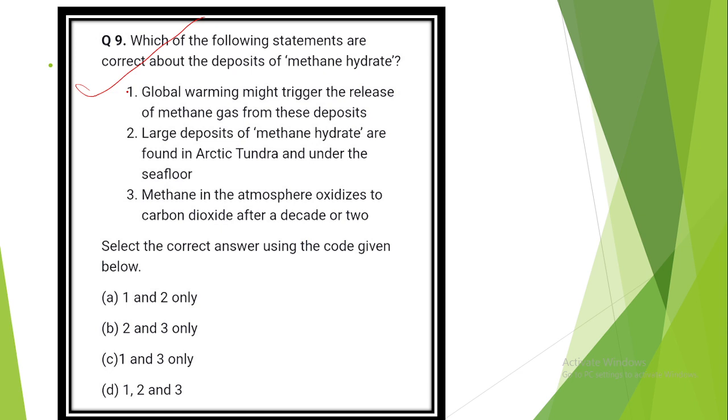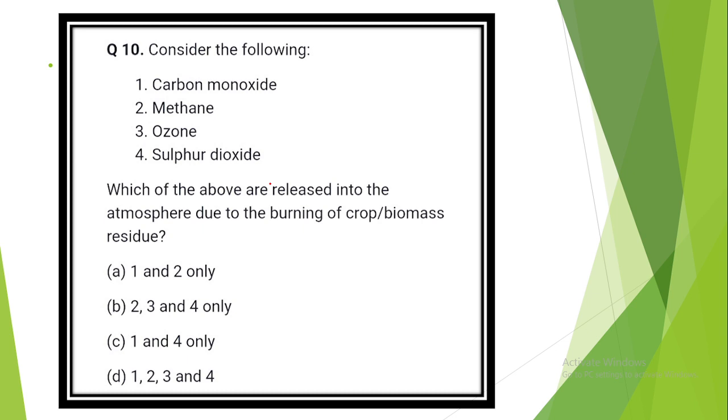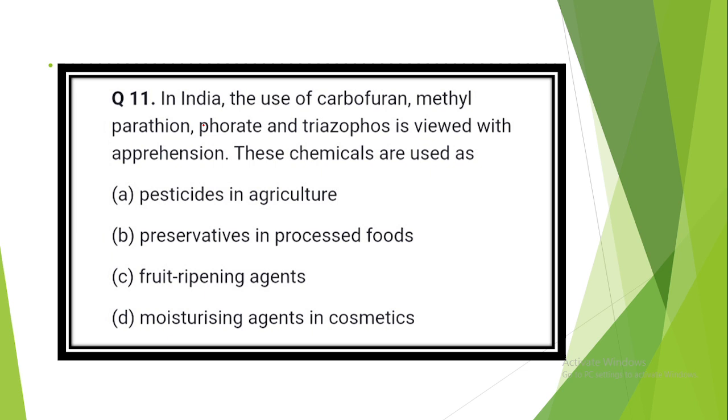For the measurement and estimation of which of the following are satellite images and remote sensing data used? Answer is option D: 1, 2 and 3. All statements are correct. Chlorophyll content in the vegetation of a specific location, greenhouse gas emissions from rice paddies of a specific location, land surface temperature of a specific location. Question number 9. Which of the following statements are correct about the deposits of methane hydrate? Answer is option D: All are correct. Global warming might trigger a release of methane gas from the deposits. Large deposits of methane hydrate are found in Arctic tundra and under the sea floor. Methane in the atmosphere oxidizes to carbon dioxide after a decade or two.